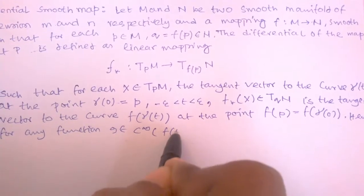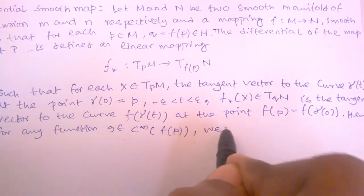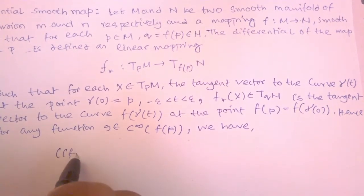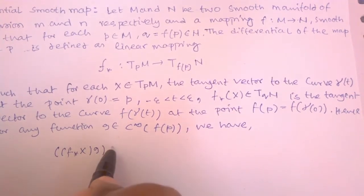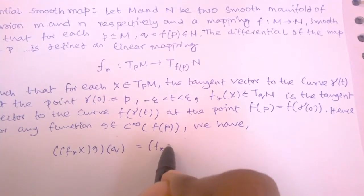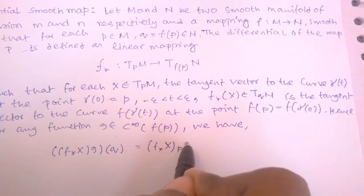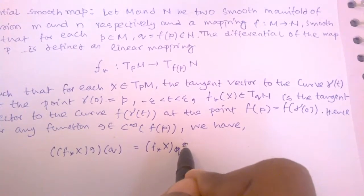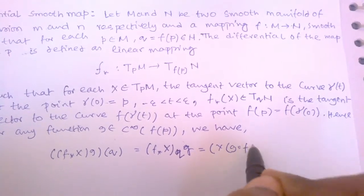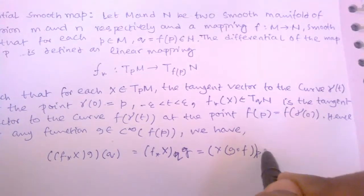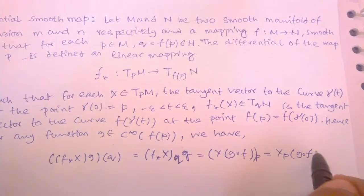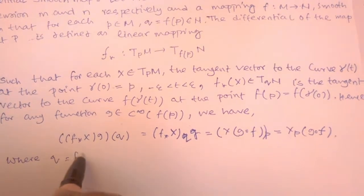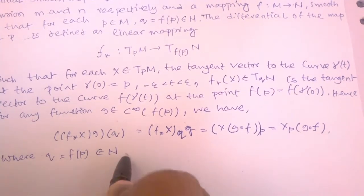Hence for any function g belonging to C∞ at F(P) — meaning the function is infinitely differentiable and smooth — we have: F*(X)_Q (g) = X_P (g ∘ F), where Q = F(P). That is, X_Q acting on g equals X_P acting on g composed with F.